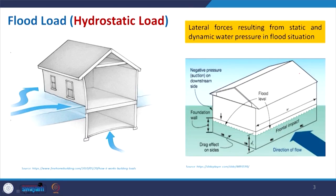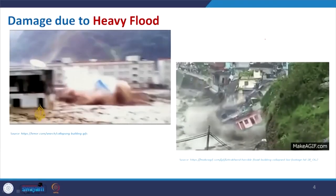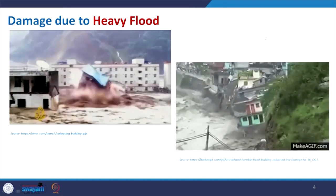Coming to flood problems and fundamentals — whenever there is a water-lock situation, water will try to pass and will have a direction and flow along a natural slope. If it encounters an obstruction, it will create thrust on one side and negative pressure or suction on the opposite side, similar to wind. Lateral forces resulting from static and dynamic water pressure in a flood situation are very dangerous and can be catastrophic, as shown in the images where heavy water flow has caused total building collapse.